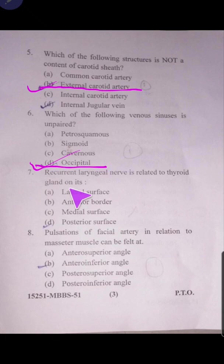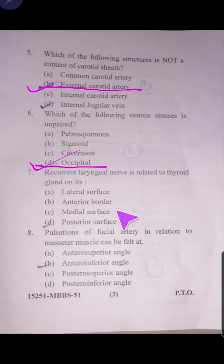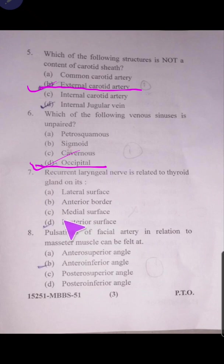Question number seven: the recurrent laryngeal nerve is related to the thyroid gland on which surface — lateral surface, anterior border, medial surface, or posterior surface? Because these nerves travel along the trachea, they are related to the medial surface of the thyroid. The answer is medial surface.